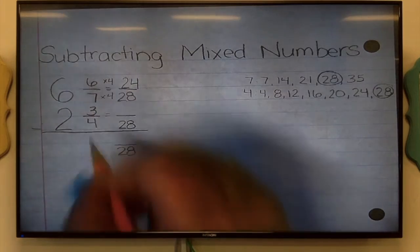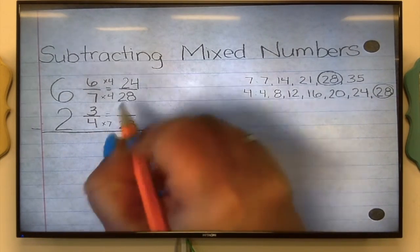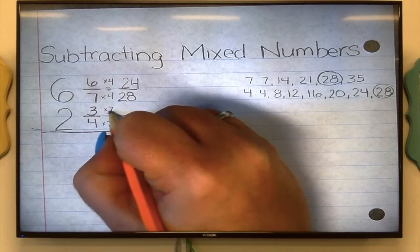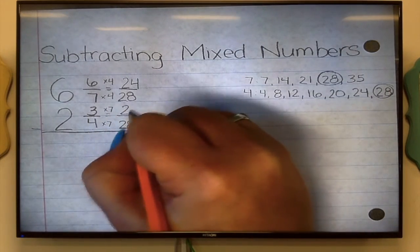For the second fraction, how do I go from being 4 to being 28? Times 7. If I multiply the bottom by 7, multiply the top by 7.